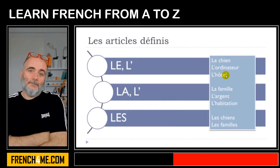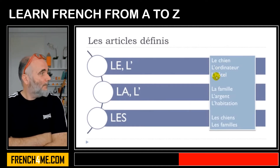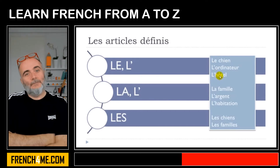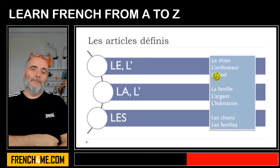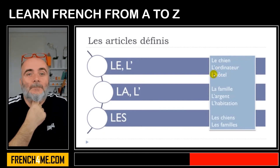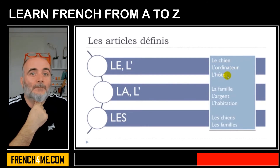Third example — I took this 'hôtel' on purpose because it starts with H. But remember that in French we don't pronounce H, so basically the first sound of the word is the vowel O. For the same reason, E needs to disappear: 'l'hôtel'. So if we repeat them: 'le chien', 'l'ordinateur', and 'l'hôtel'.